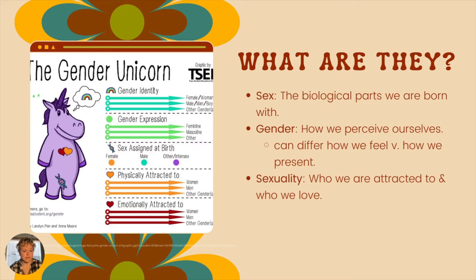So gender, sex, and sexuality — what are they? Sex is the biological parts we are born with. Gender is how we perceive ourselves, and these can differ.